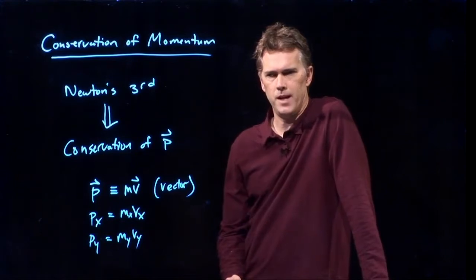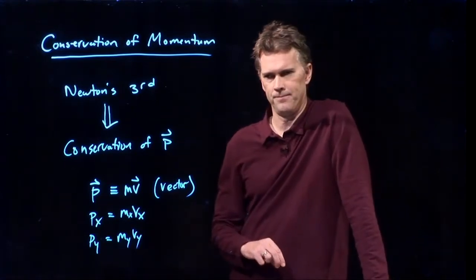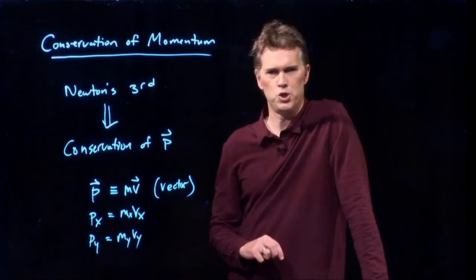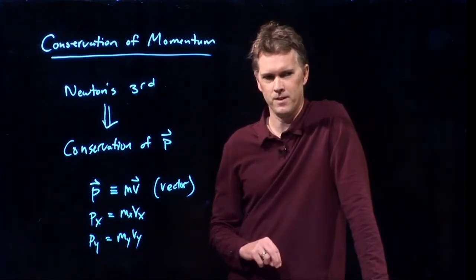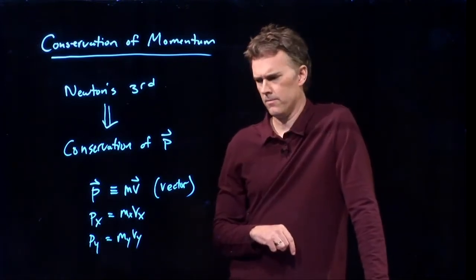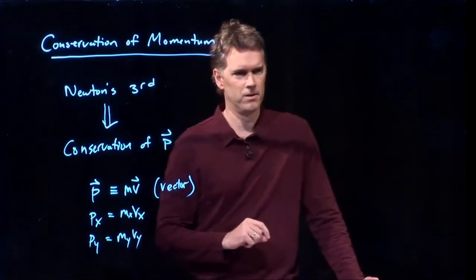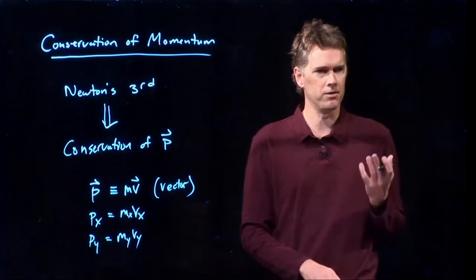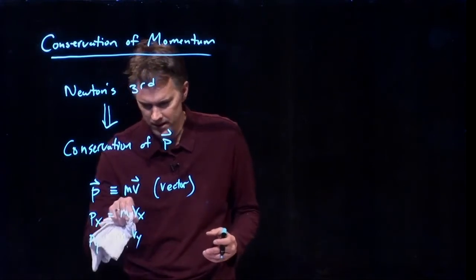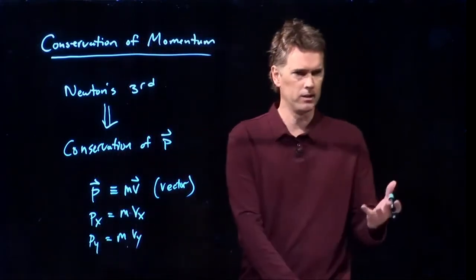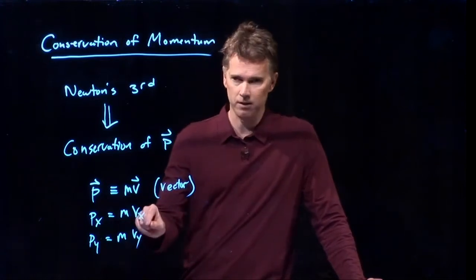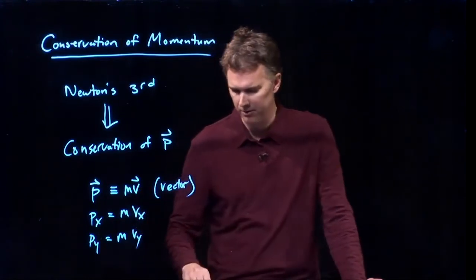Now, anybody have any problem with what I just wrote? I'll give you a hint. You probably should have a problem with what I just wrote. Kevin, you wrote components on the mass term? Yeah. Why would I write components on the mass term? Is the mass a vector or is the mass a scalar? It's a scalar. So there should be no components on the mass term. Because it's just a number. It's five kilograms. It's ten kilograms. It's just a number. No components on the mass term. Components go on the velocity. The velocity has components to it.